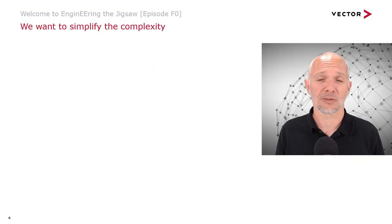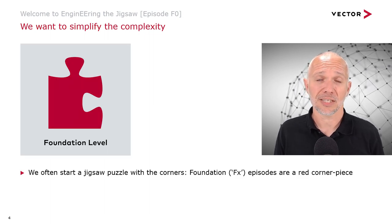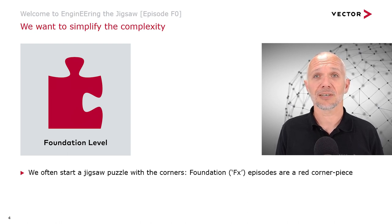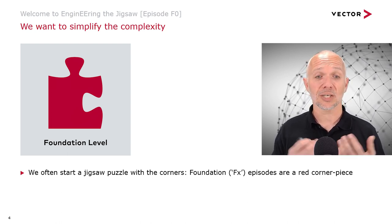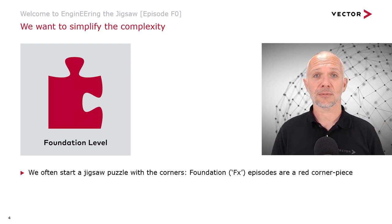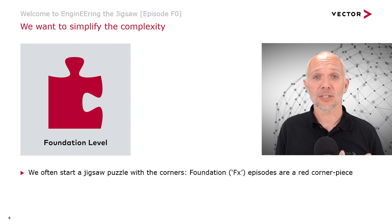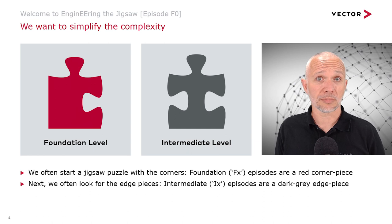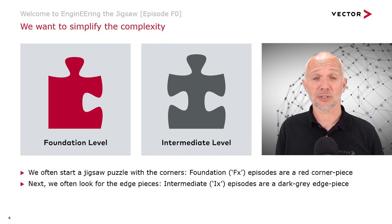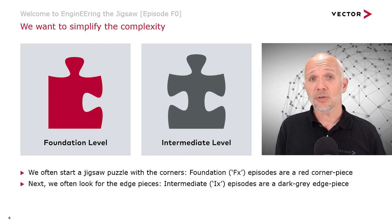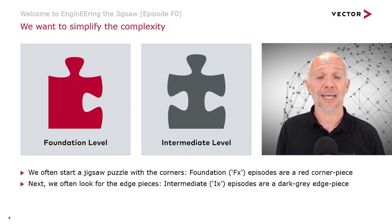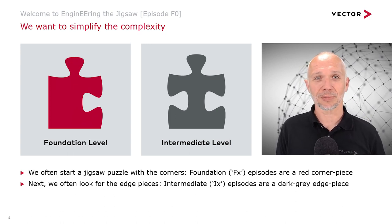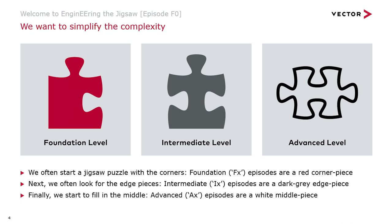We want to simplify the complexity. If we think about a way to approach complexity, we can think of a jigsaw puzzle as a fairly complex thing. When starting a jigsaw we tend to start with the corners, and in this series we're going to identify our foundation episodes with a red corner jigsaw piece. Once the corners are in place, the next step is to look for the sides — the edges — and our intermediate episodes will be identified with a dark grey edge piece. Once edges and corners are in place we move into the centre, and our advanced episodes will be identified with a white middle piece with a black outline.